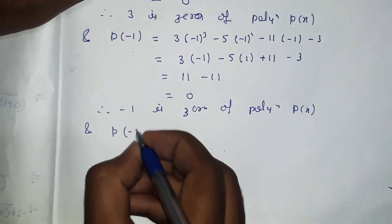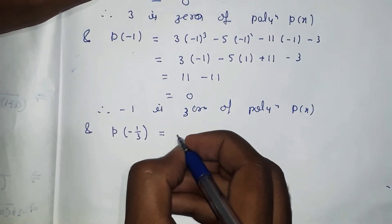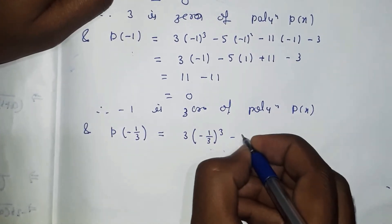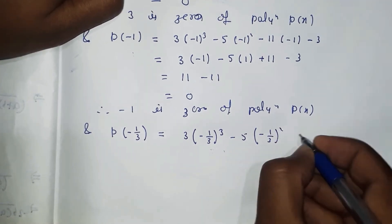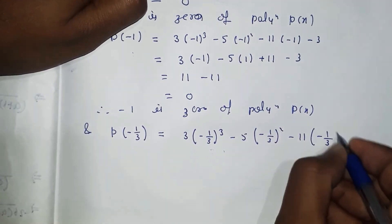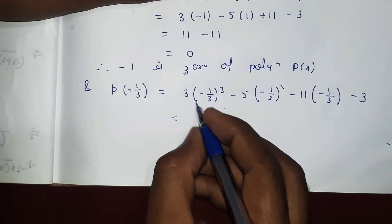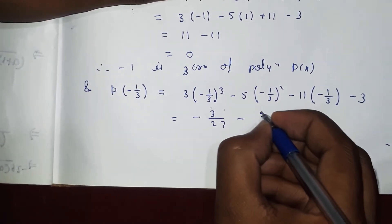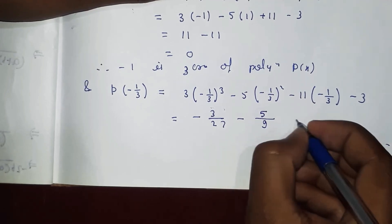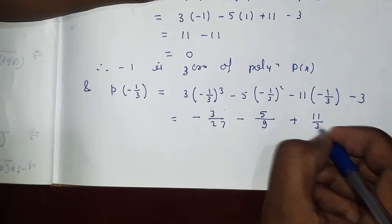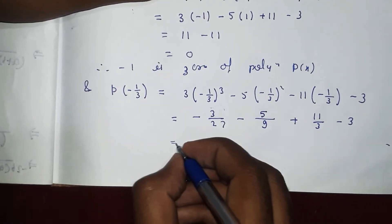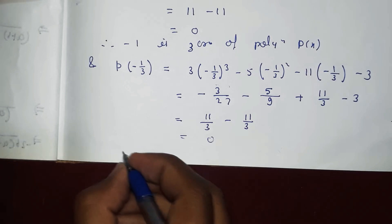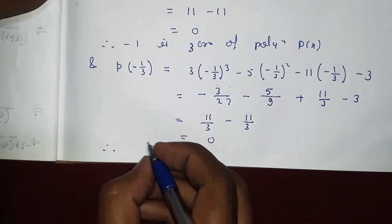Now let's find p(-1/3). P(-1/3) = 3×(-1/3)³ - 5×(-1/3)² - 11×(-1/3) - 3. Solving: 3×(-1/27) - 5×(1/9) + 11/3 - 3 = -1/9 - 5/9 + 11/3 - 3. Further simplifying: 11/3 - 11/3 = 0. Therefore, this equals 0.